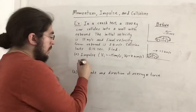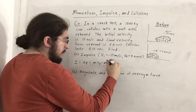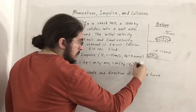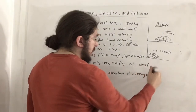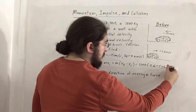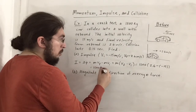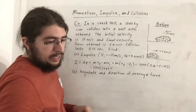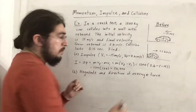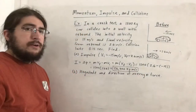Impulse equals change in momentum: J = m·(vf − vi) = m·delta_v. So J = 1500 × (2.6 − (−15)) = 1500 × 17.6 = 26,400 kg·m/s. The unit for impulse is the same as momentum — kilogram·meters per second, or equivalently newton-seconds.